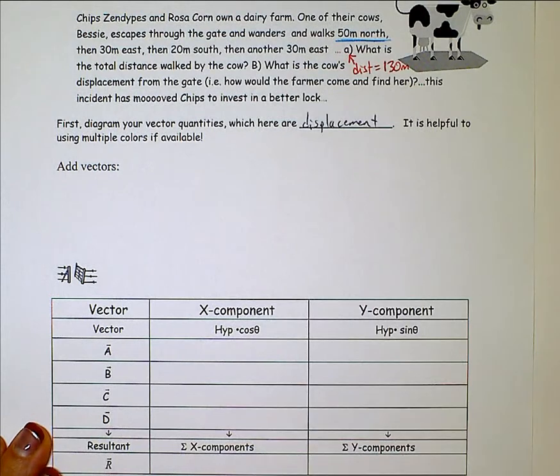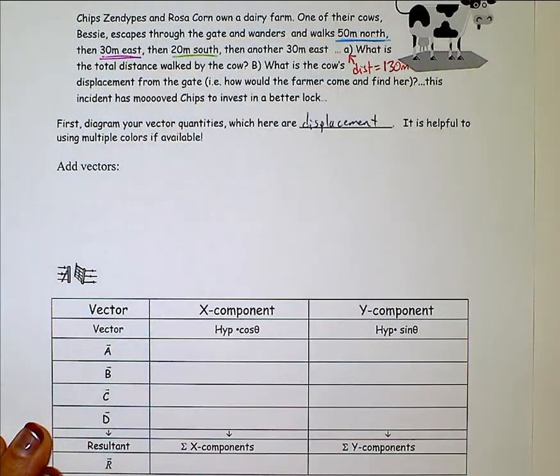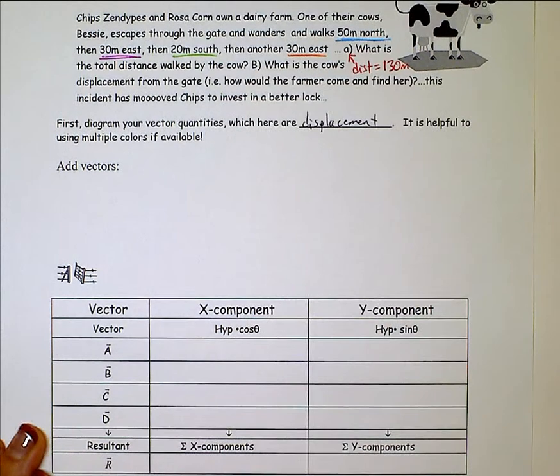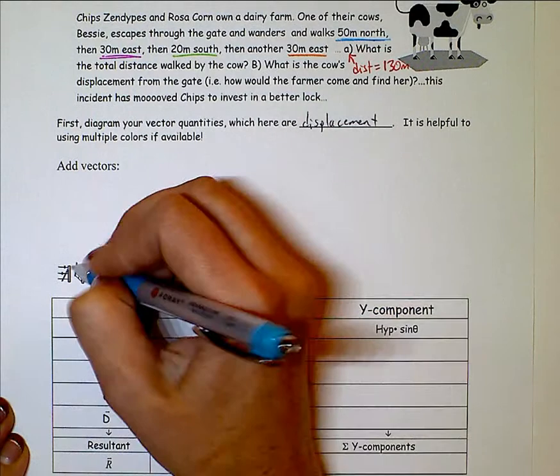30 east, 20 south and then another 30 east. I want to draw them to scale and we are going to do tip to tail and I'm going to start right here at the corner of the gate.